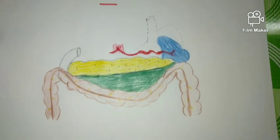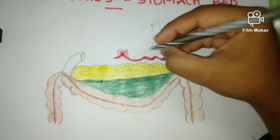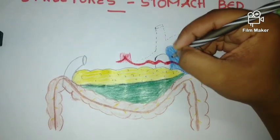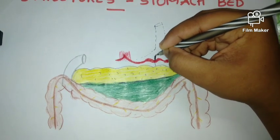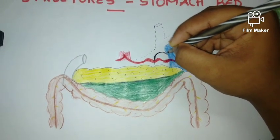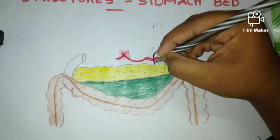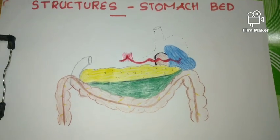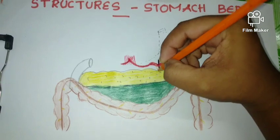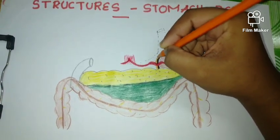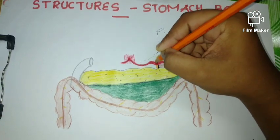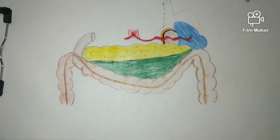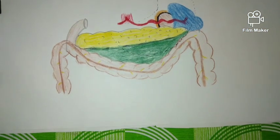After that we can draw the kidney. Above the kidney we can see the suprarenal gland. This completes the diagram of the relations of the stomach on the posterior surface.